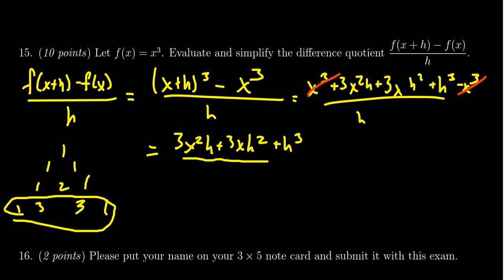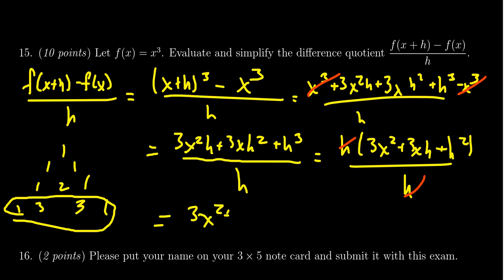You'll notice that after we canceled out the f of x part, everyone in the numerator is now divisible by h. We factor that out so we get 3 x squared plus 3 x h plus h squared all over h, and then the h in the denominator will cancel with that multiple of h in the numerator. So we see that the simplified difference quotient will be 3 x squared plus 3 x h plus h squared.